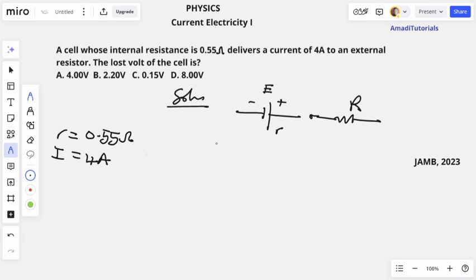Recall that EMF equals to the external potential difference which is capital letter V plus the lost volt. That's the voltage drop due to the internal resistance of this cell, the resistance from the cell itself which is represented by small v. This small v is called the lost volt.